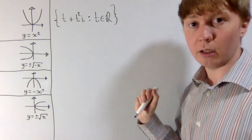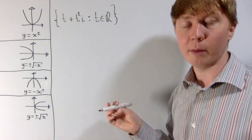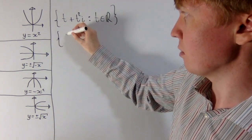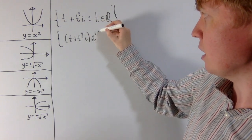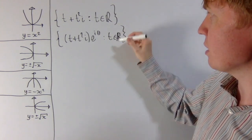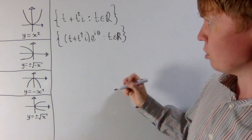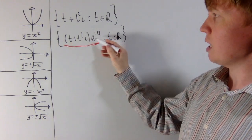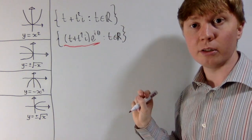Rotating something in the complex plane is really nice: to rotate by theta radians anti-clockwise, you just multiply by e to the i theta. So you've got t plus t squared i, and if you rotate this by theta radians anti-clockwise, we multiply through by e to the i theta. To find the new x and y coordinates after this rotation, we expand e to the i theta out of exponential form and find the real and imaginary parts.